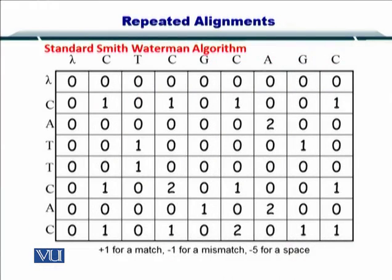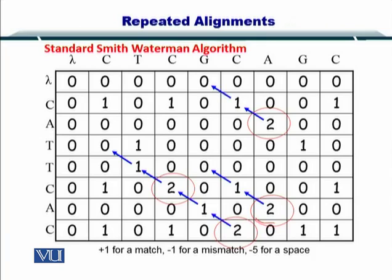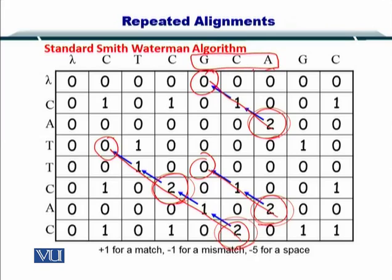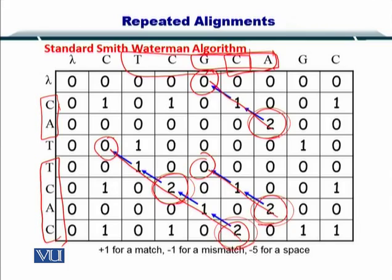Here you see the standard Smith-Waterman algorithm that was used for the alignment. This is a local alignment example. You could see that we selected the highest scores that occurred within the matrix, and we traced them back till the zeros. In this way, we obtained multiple local alignments like that here, as well as here.